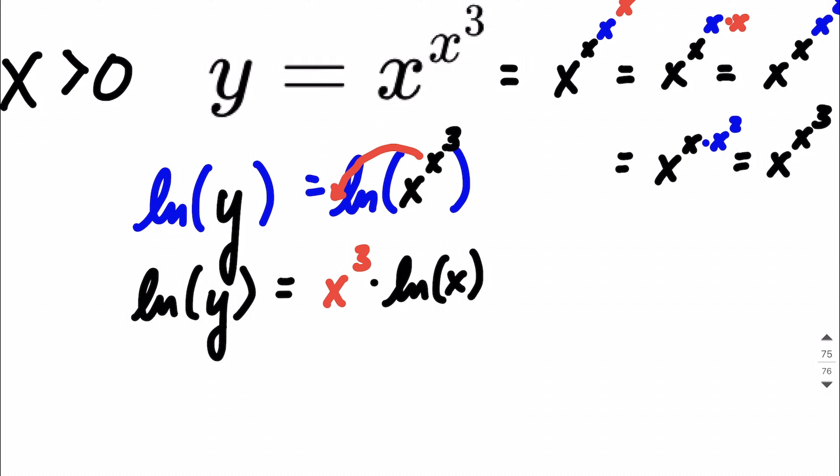At this point, we now have kind of two functions multiplied together on the right-hand side. We can start using our implicit differentiation. And to do so, let's map out our plan. We have a multiplication going on the right side, so that's going to mean the product rule.